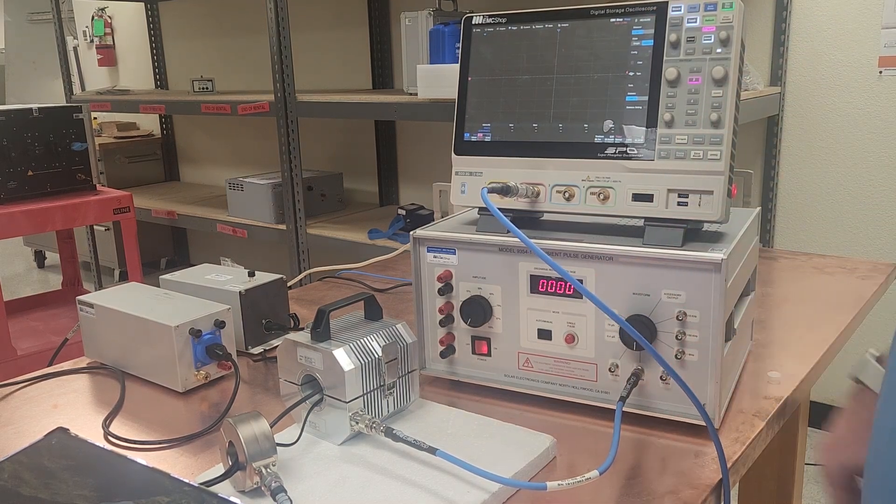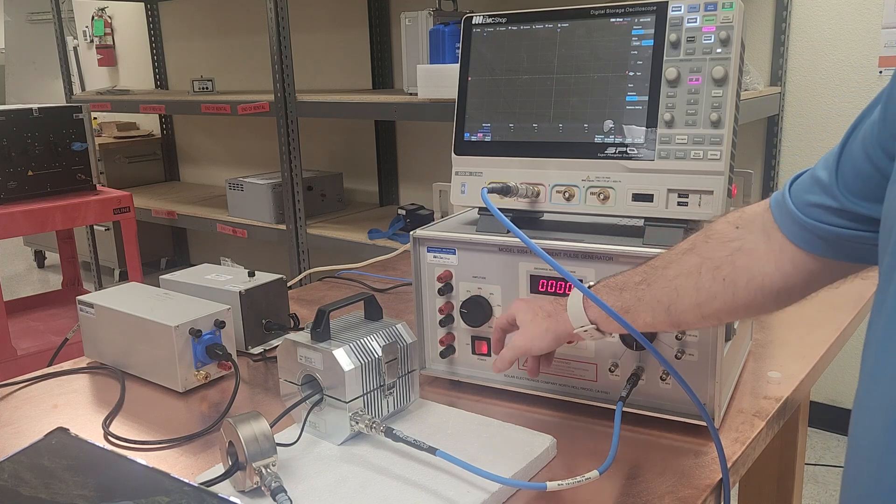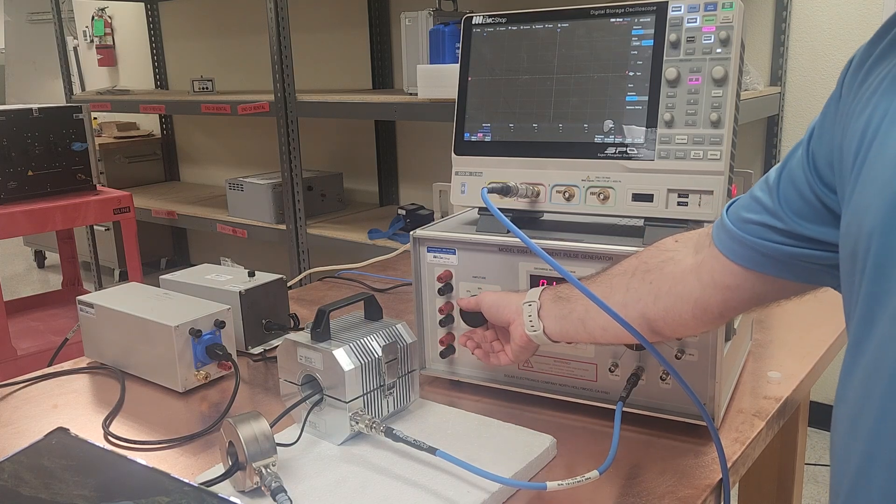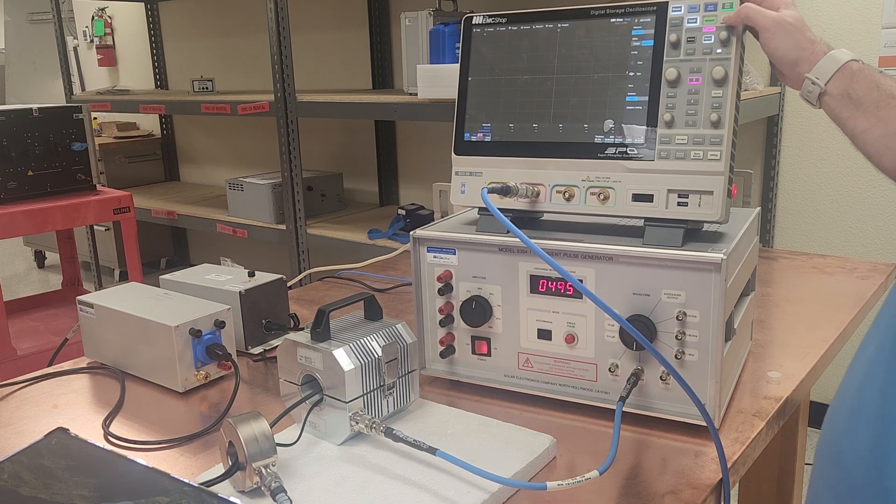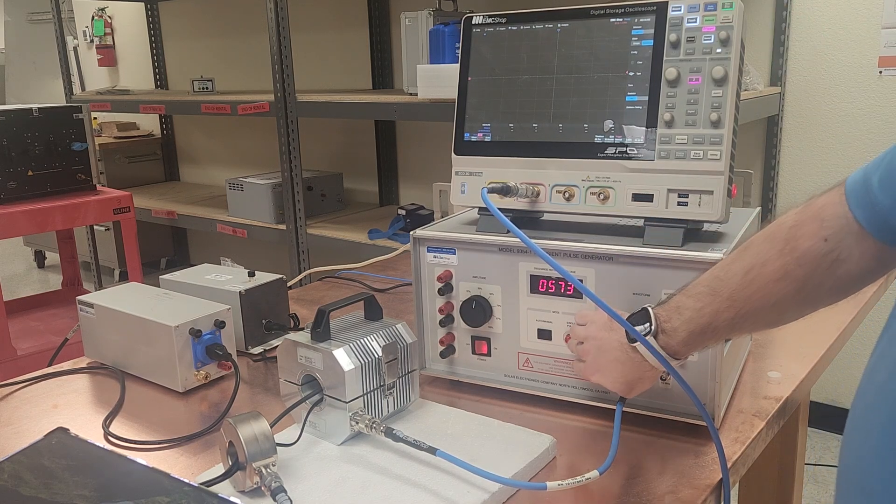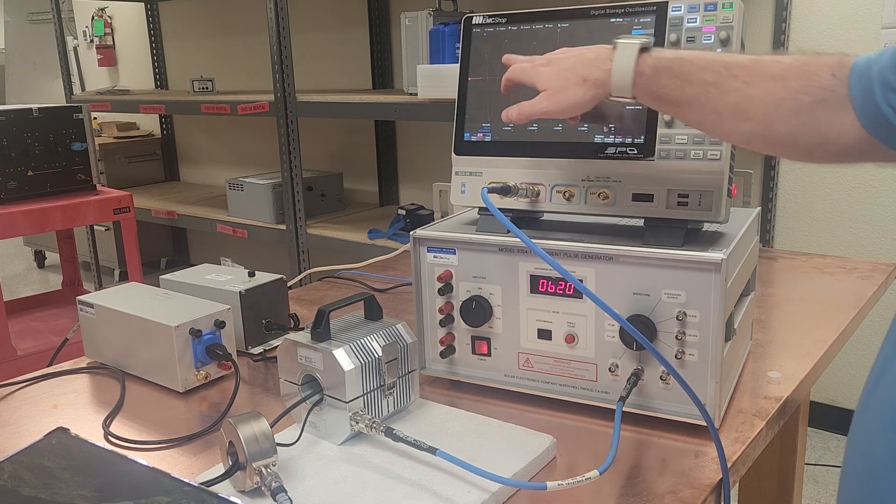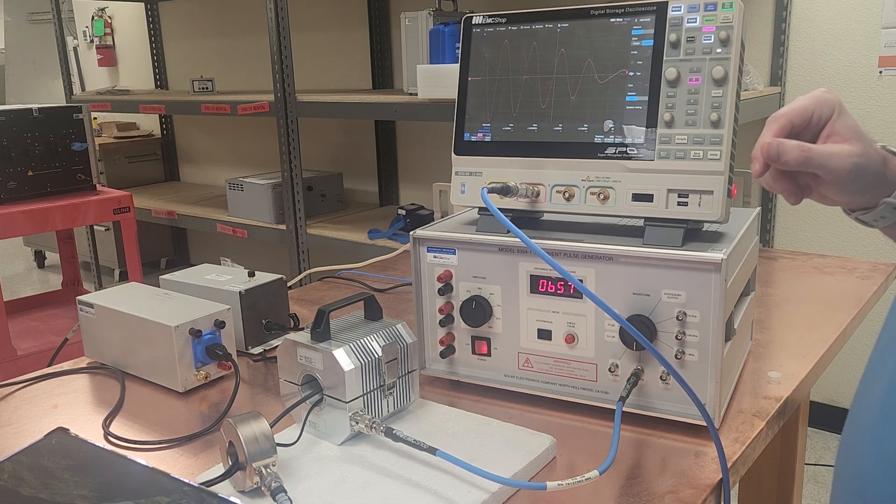You start off usually at 10 kilohertz, but I'm gonna start off down here because I've already just been working on it. You'll ramp up the amplitude knob, verify your waveform to a single discharge, then you can calculate your current and make sure you're where you need to be.